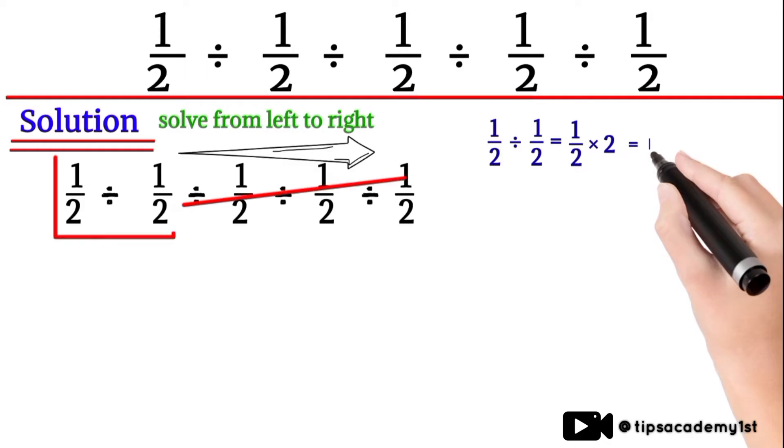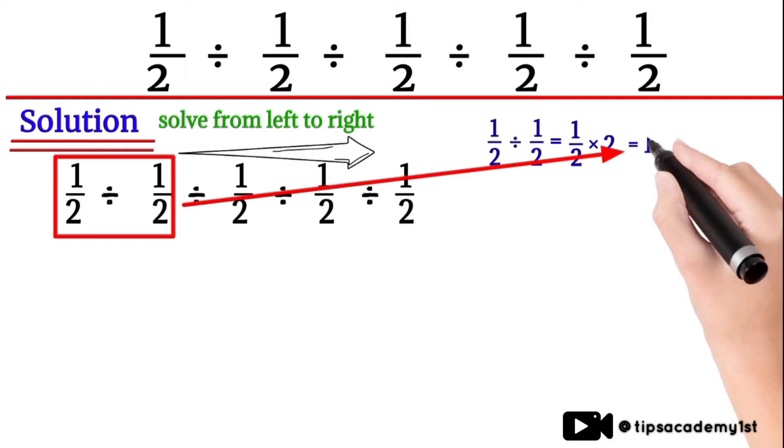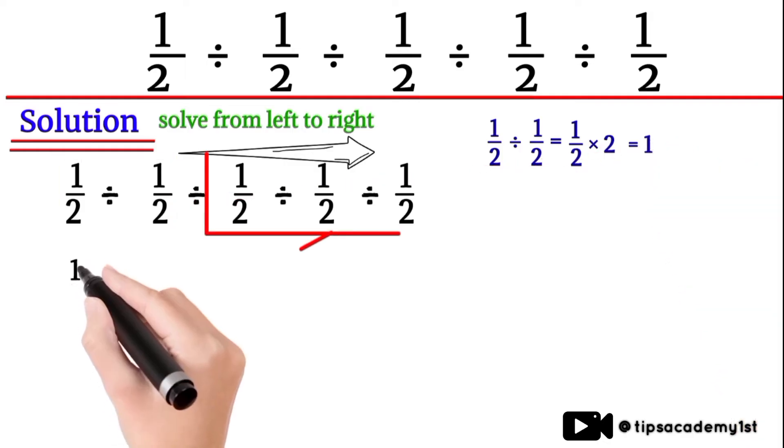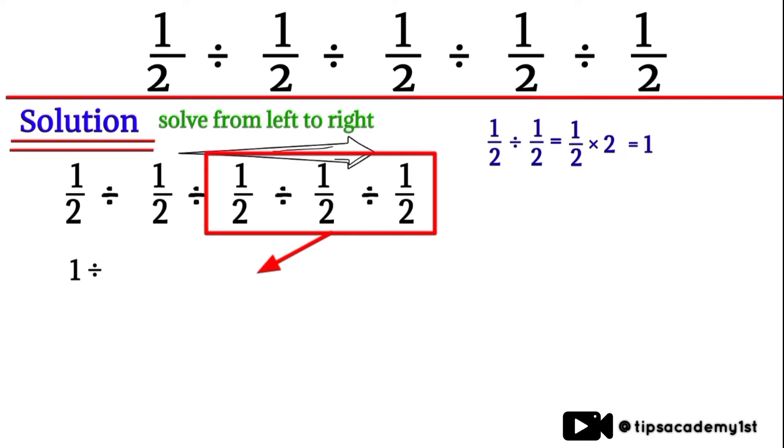So first two terms have answer 1, then remaining terms will be mentioned as it. Then we will consider next two terms.